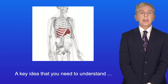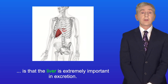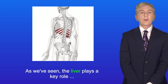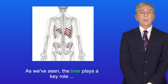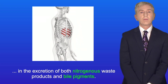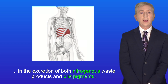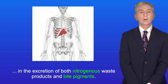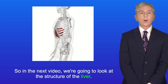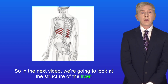A key idea you need to understand is that the liver is extremely important in excretion. As we've seen, the liver plays a key role in the excretion of both nitrogenous waste products and bile pigments. In the next video we're going to look at the structure of the liver.